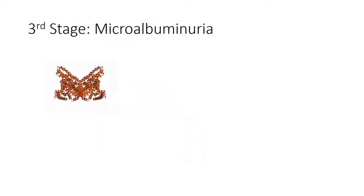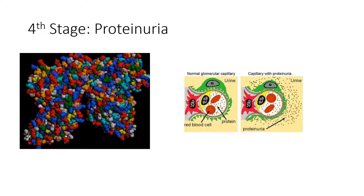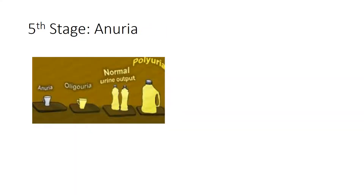In the second stage, the destruction continues. In the third stage, microalbuminuria is present, and this stage can continue for up to 20 years — a very long period. Subsequently, the fourth stage is proteinuria, which is due to damage of the podocytes and basement membranes.